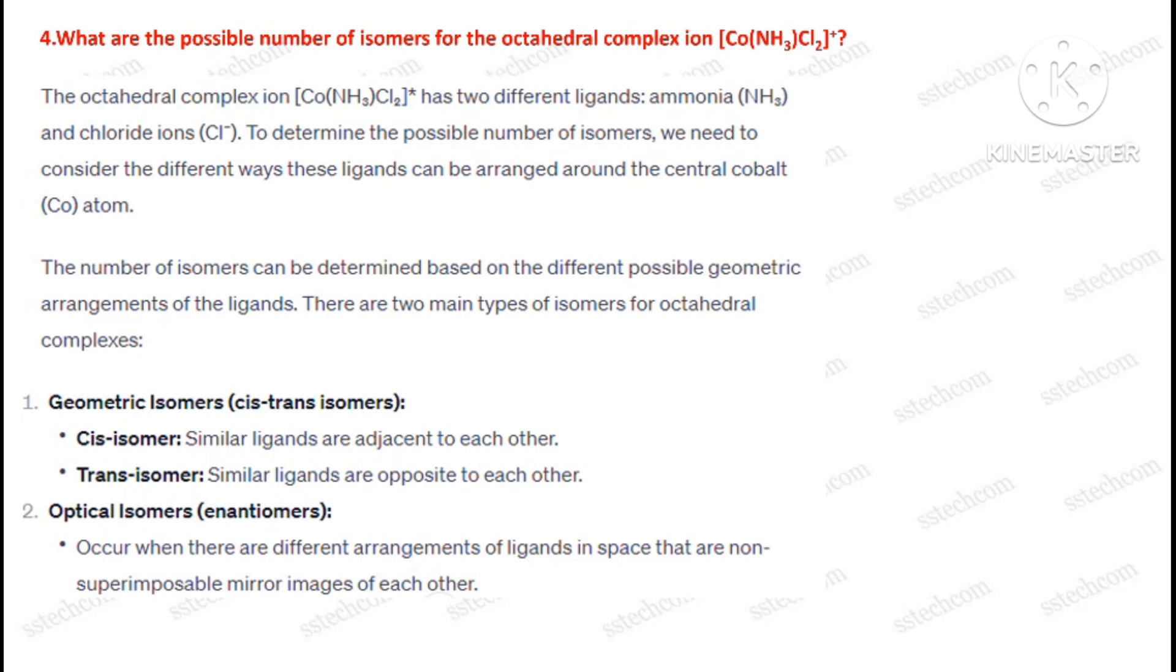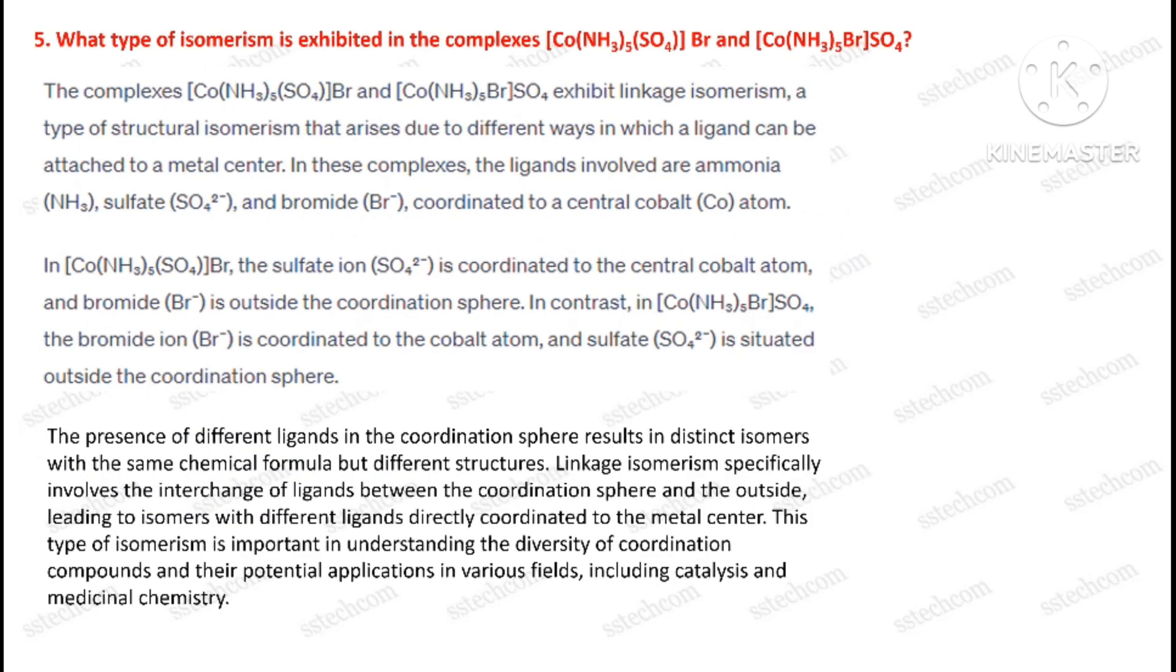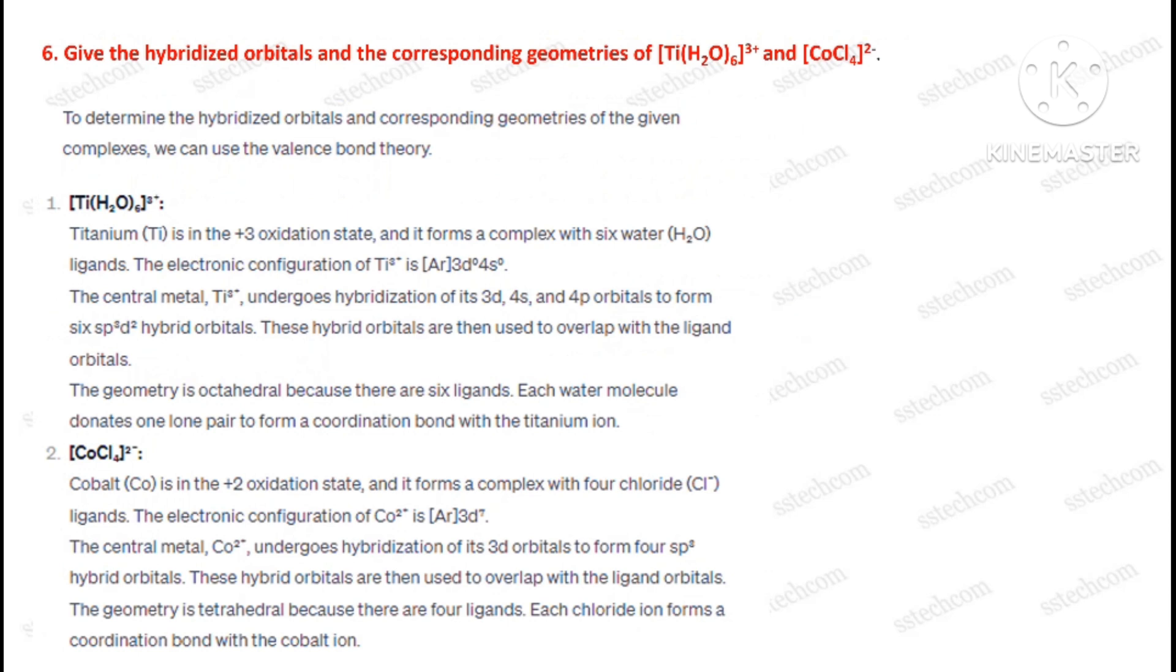Question number four: What are the possible numbers of isomers for the octahedral complex ion? Question number five: What type of isomerism is exhibited in the complexes? Question number six: Give the hybridized orbitals and the corresponding geometries of these two.